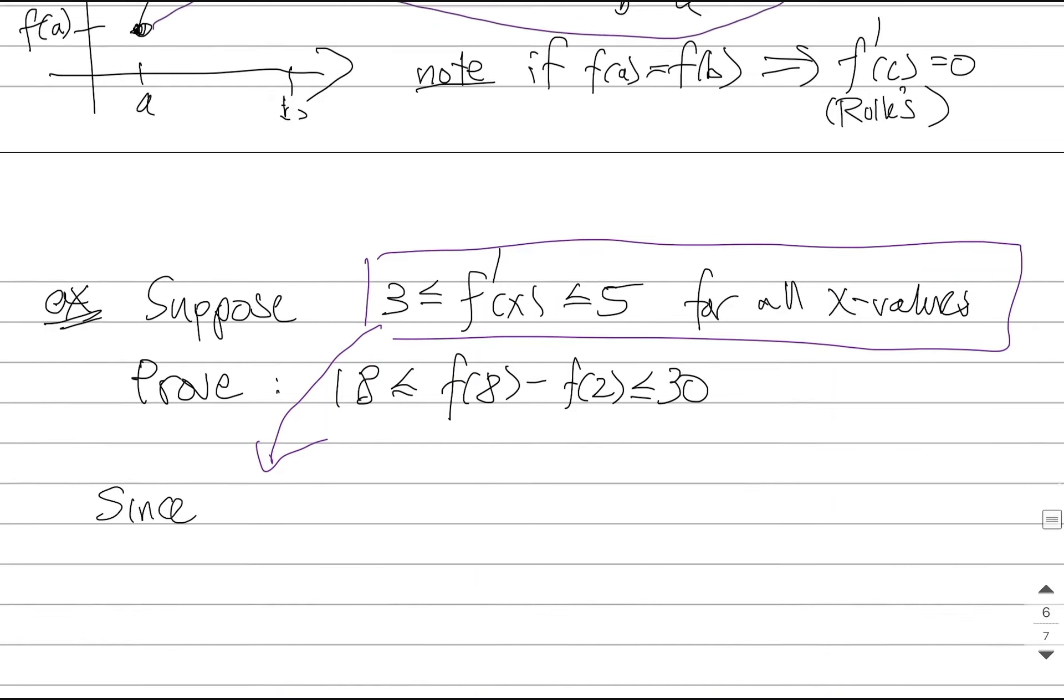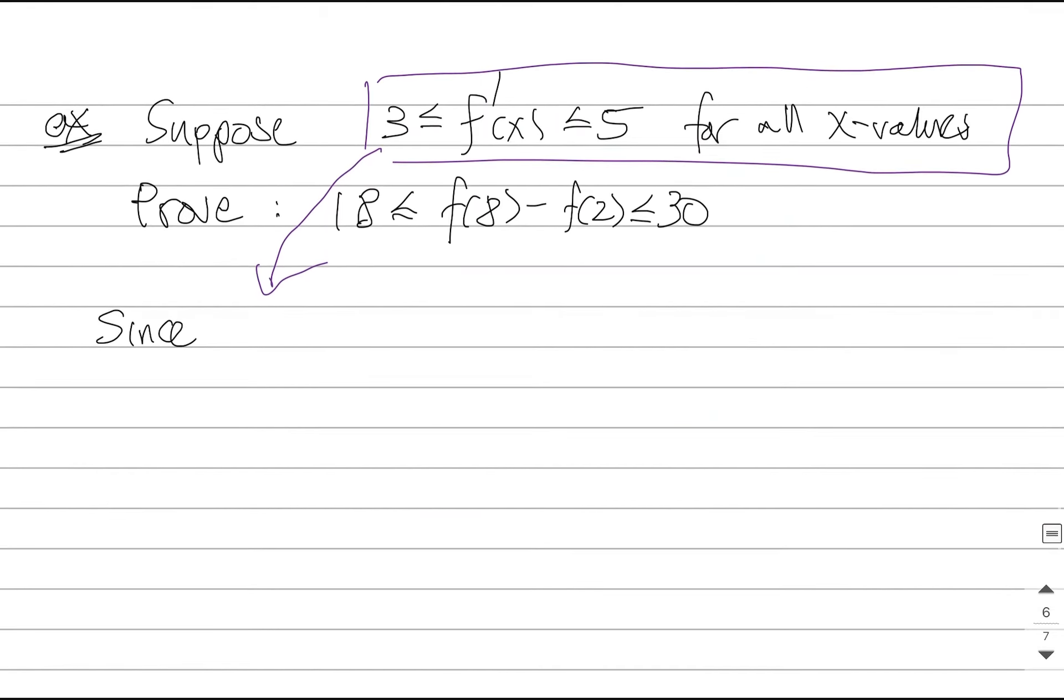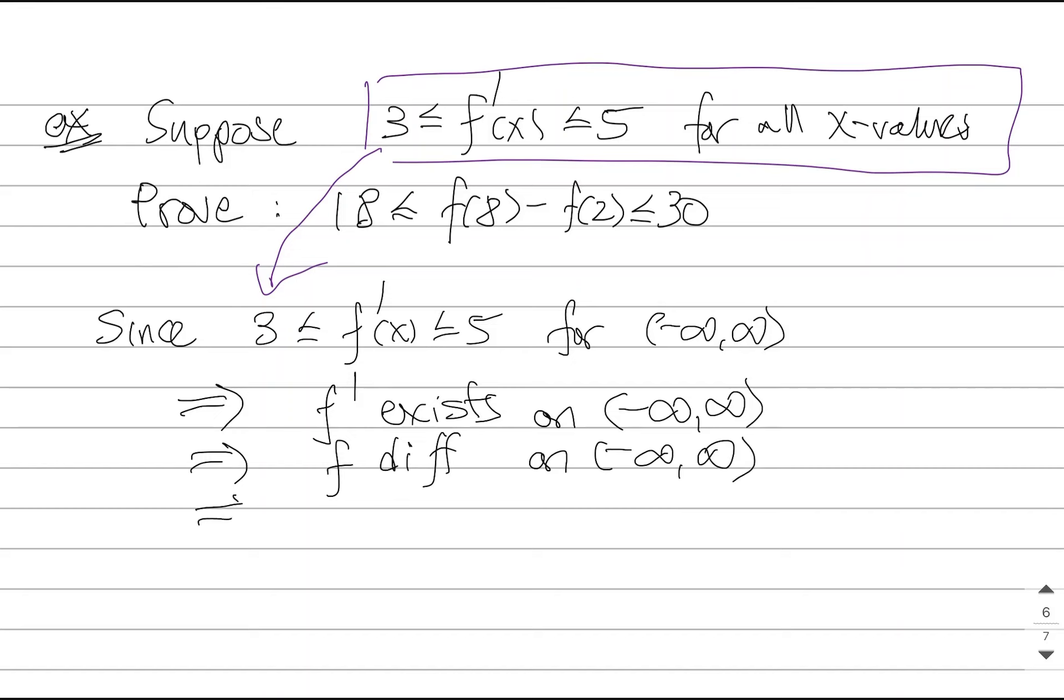For example, since we have this relationship, since the derivative is always trapped between 3 and 5 for negative infinity to positive infinity, this implies that f prime exists on the entire real line, which implies that f is differentiable on the entire real line, which implies that f is continuous on the entire real line. So this function is really nice and well-behaved. I have no idea what its graph looks like, but I know that it can't have any holes, gaps, jumps, breaks, pokey things, vertical asymptotes, vertical tangent lines, nothing. In that sense, it's pretty nice.